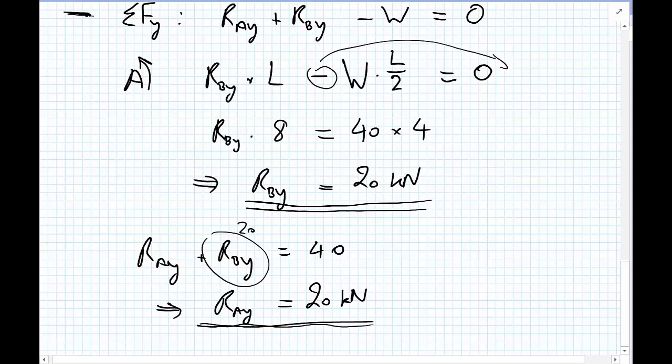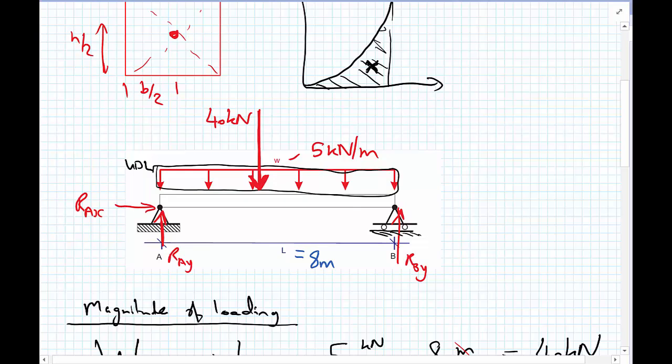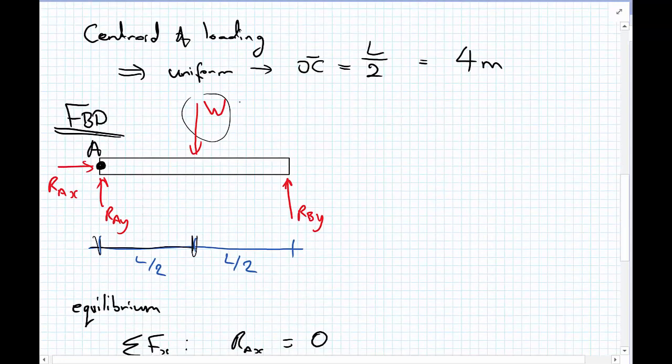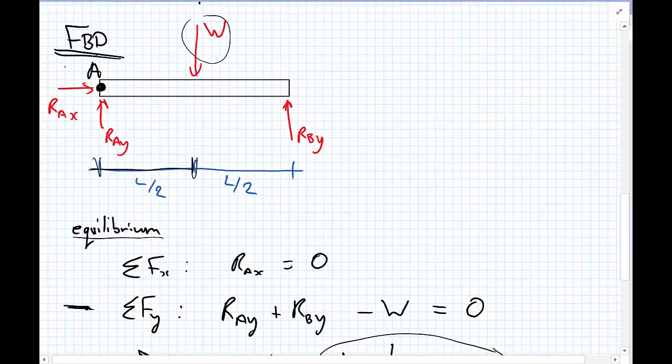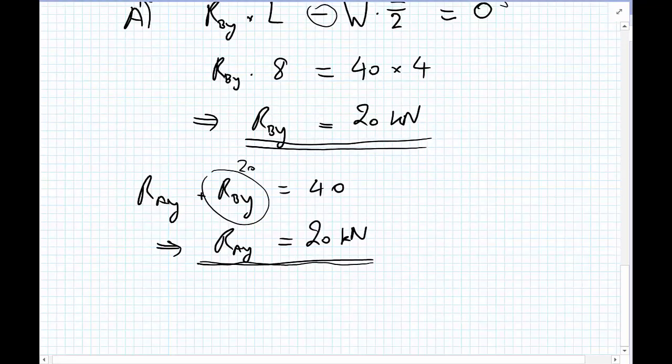So, going from knowing the distribution of the loading, we could calculate the total load by multiplying by the length, we could evaluate where this loading should act based on the centroid of the loading, and condense the load down to a point load, and then apply that and use it in our free body diagram, and apply the usual equations of equilibrium to get the reaction forces.